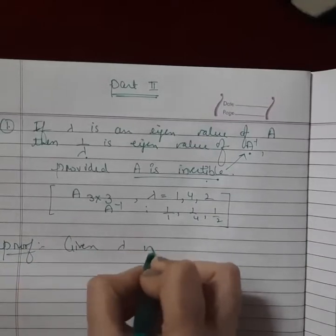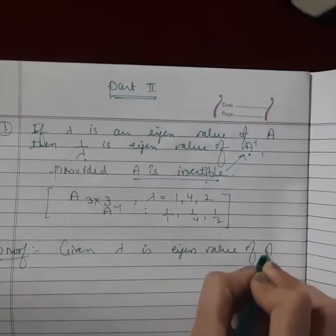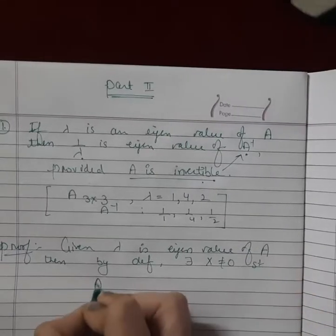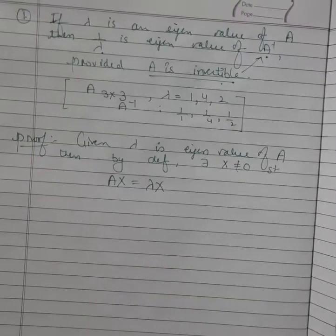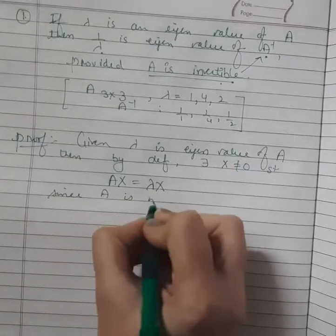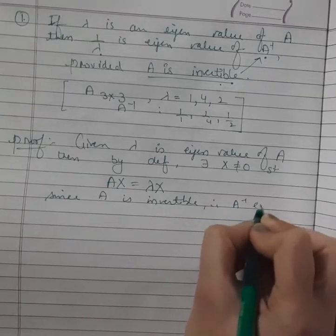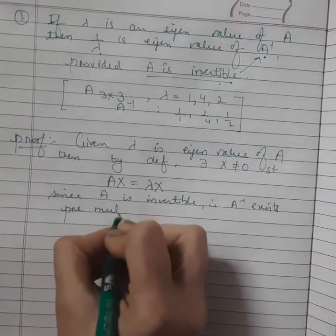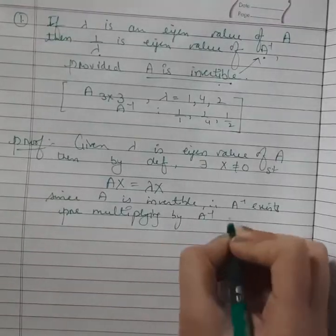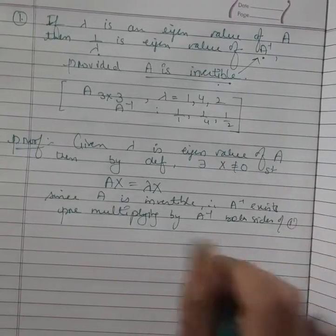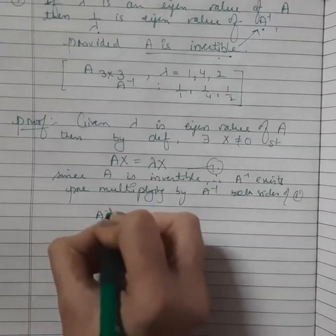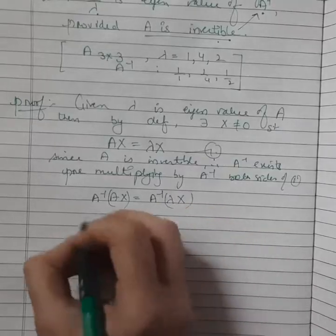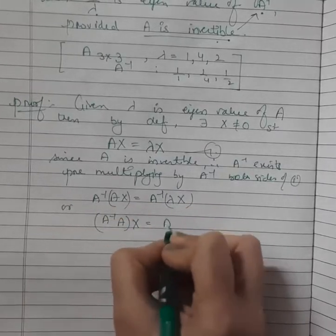Proof: Given lambda is an eigenvalue of A. Then by definition, there exists a non-zero vector x such that Ax equals lambda x. Since A is invertible, A inverse exists. Pre-multiplying both sides of this equation by A inverse, we get A inverse Ax equals A inverse lambda x.